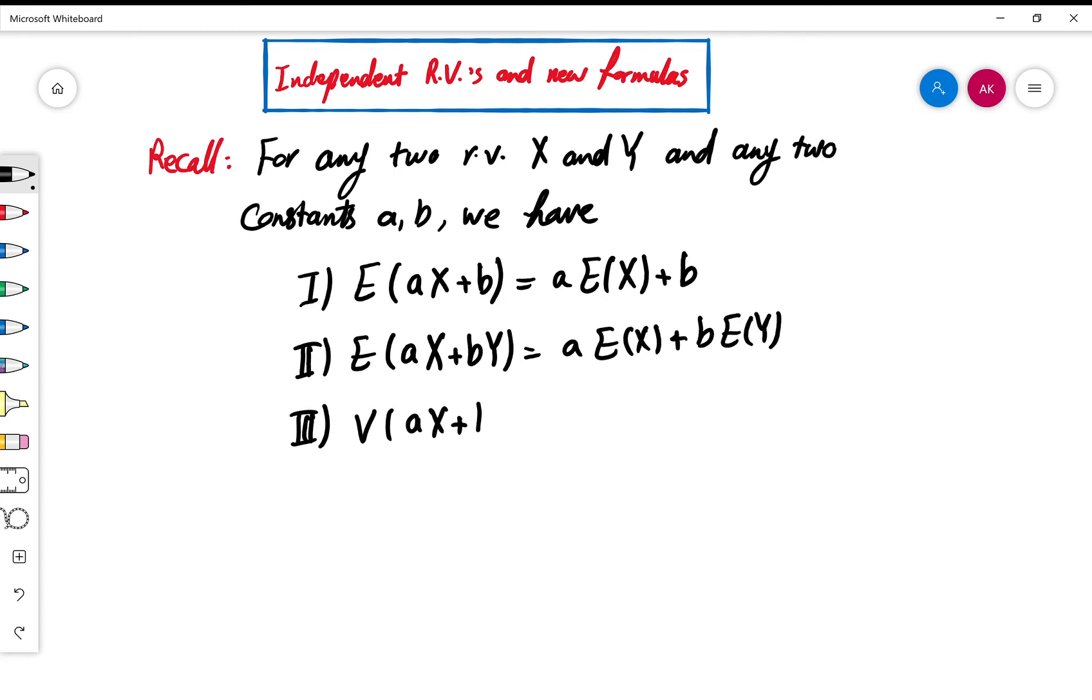The third property was for the variance: variance of aX+b is equal to a²V(X). As a result of this, we know that the standard deviation of aX+b is also equal to absolute value of a times standard deviation of X itself.